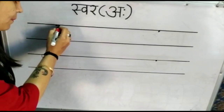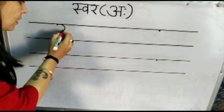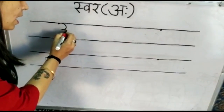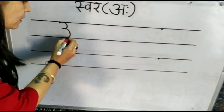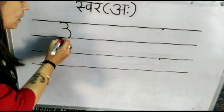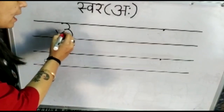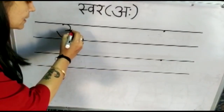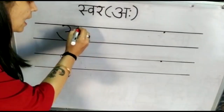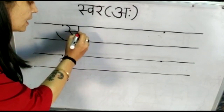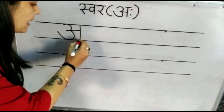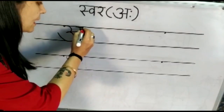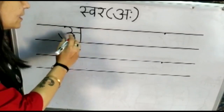Make one curve, then another curve. Extend it up, then make a sleeping line, then a standing line, and finally a sleeping line — just like A.